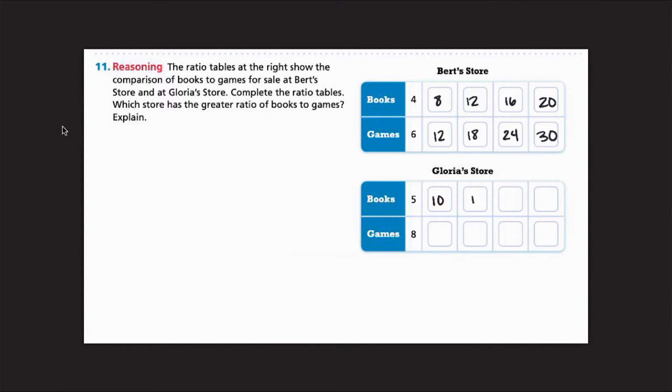Okay, 5, 10, 15, 20, 25. And then our last one, 8, 16, 24, 32, and 40. So now that we've completed our ratio tables, we're good to go to answer the question.